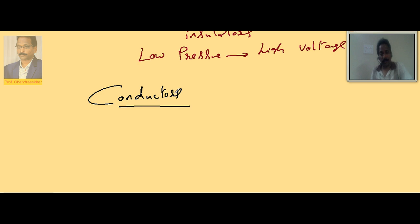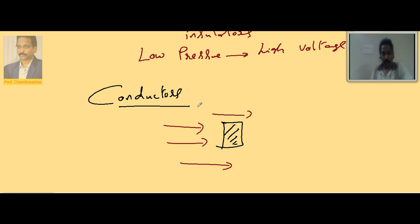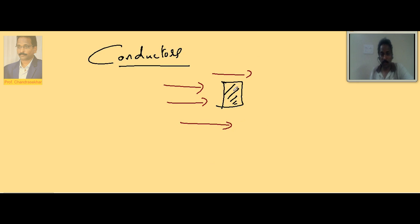When an insulator is placed in an electric field and you slowly increase the strength of the field, at a particular value — one value of the electric field intensity — this insulator starts behaving like a conductor. Up to a certain extent it is an insulator, but beyond that it behaves like a conductor. The maximum strength of the electric field up to which an insulator can withstand without becoming a conductor is called dielectric strength.